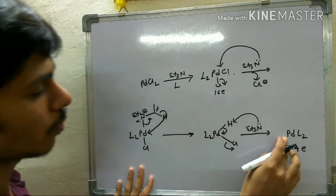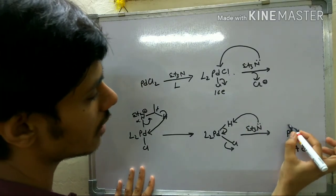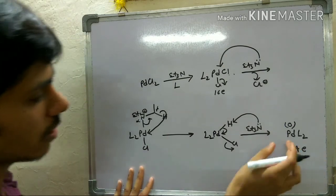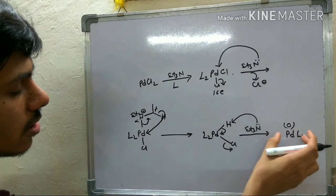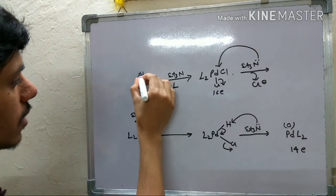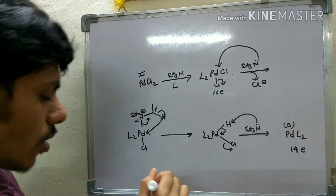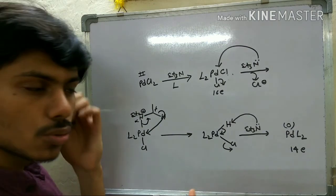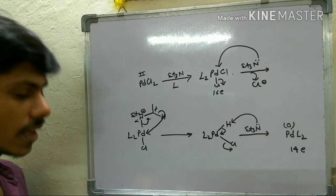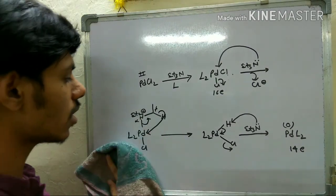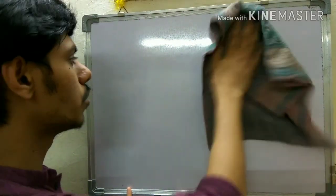PdL₂ is a 14-electron species — 10 electrons from palladium and 2 from each L ligand. More importantly, it is in the zero oxidation state because it has no negatively charged ligands and carries no charge. So starting from a +2 oxidation state you obtain a zero oxidation state. These are the two ways of generating the palladium(0) complex, which is the effective catalyst for your reaction.